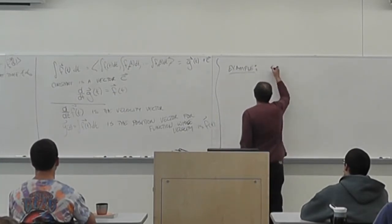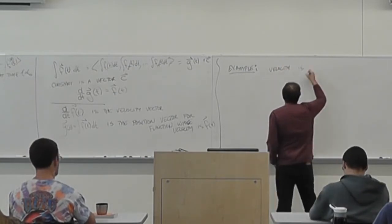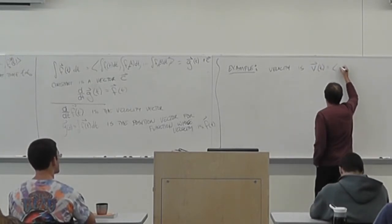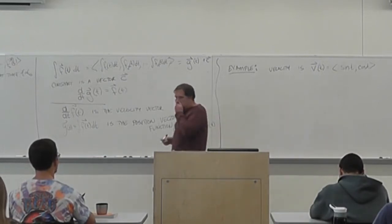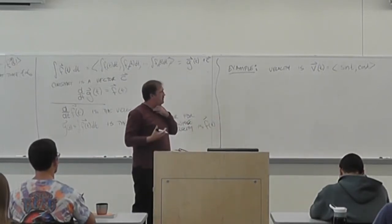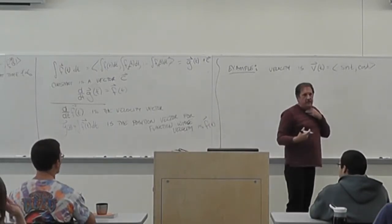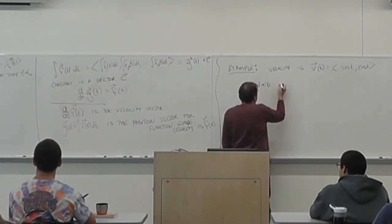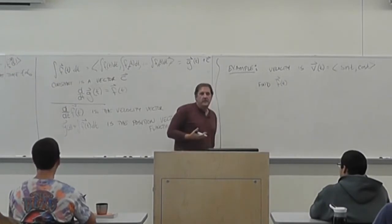Let me just use that same example. Suppose the velocity vector V(t) is given by (sin t, cos t) — let's put it in three dimensions: (sin t, cos t, cos t). I want to find a position function. This alone won't give me an answer; I would need an initial position.